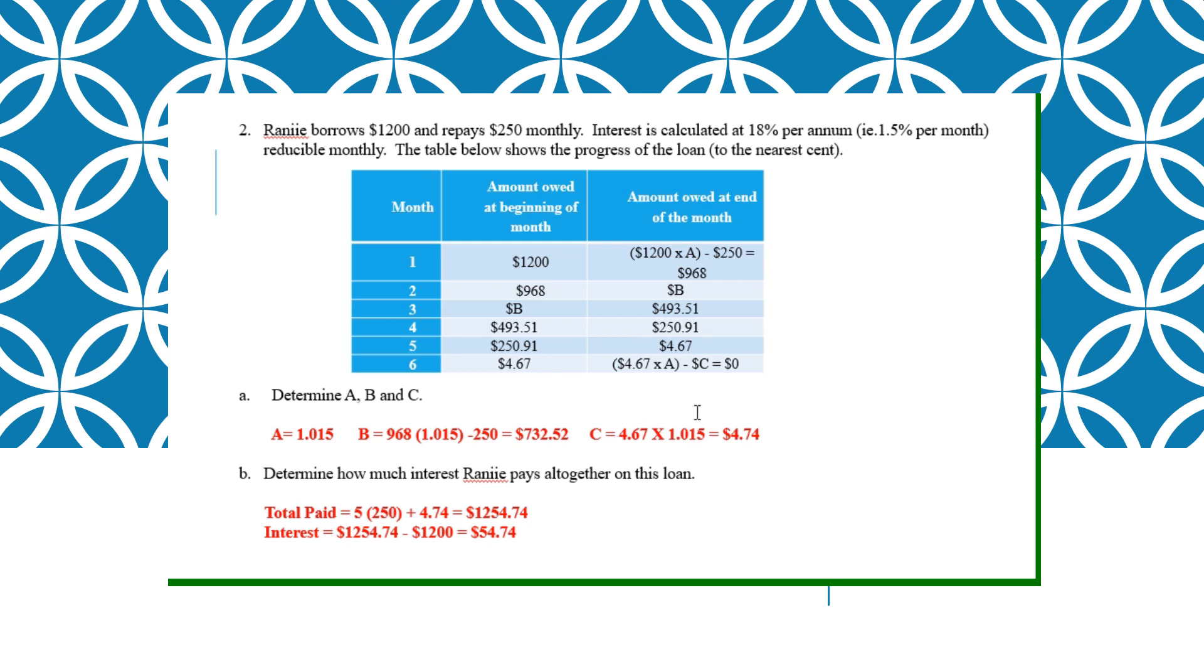C is your last payment. Your last payment also you have to subject to interest. Your last payment is $4.74. Determine how much interest does she pay. So you first of all find out how much she paid in total. Then you minus the principal, you will get the interest.